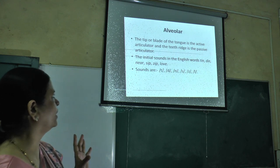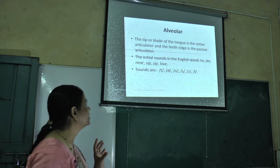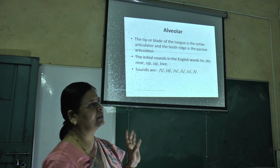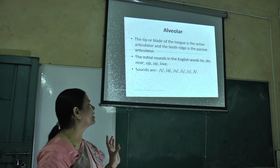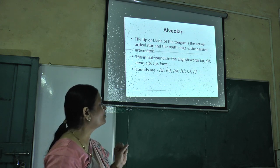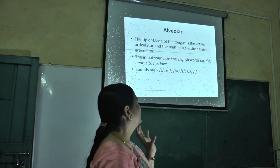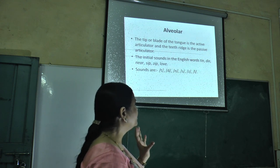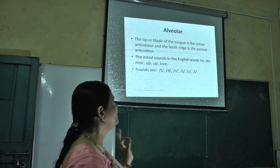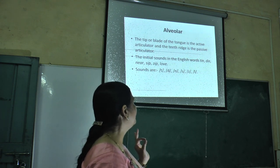Alveolar. The tip or blade of the tongue is the active articulator and the teeth ridge is the passive articulator. The initial sounds in the English words 'tin', 'bin', 'near', 'sit', 'zip', and 'la' are alveolar sounds.